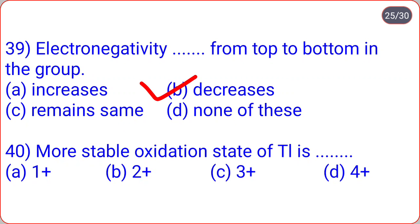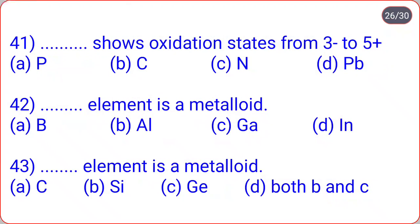More stable oxidation state of thallium is 1+ — option A. Which element shows oxidation states from 3− to 5+? That is nitrogen — option C.